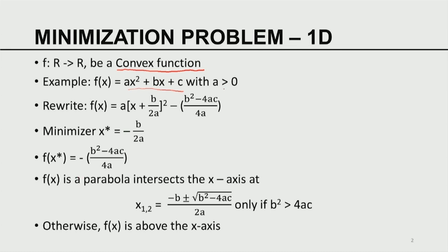Geometrically, f(x) with A ≥ 0 represents a parabola. If B² > 4AC, it intersects the x-axis at two points and the minimum is below the x-axis. Otherwise the minimum is above the x-axis. With A > 0, this quadratic function is a convex function — simply a parabola. It has a unique minimum, and the unique minimizer is given by x* = −B/2A.